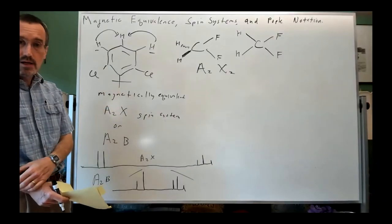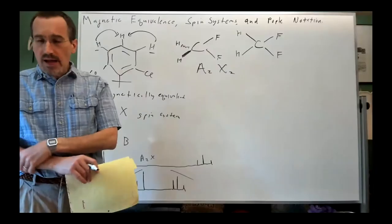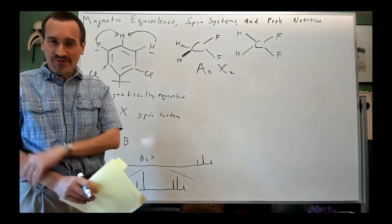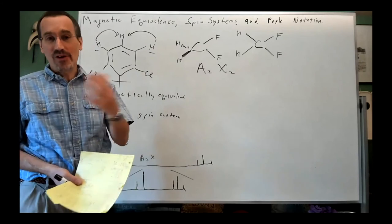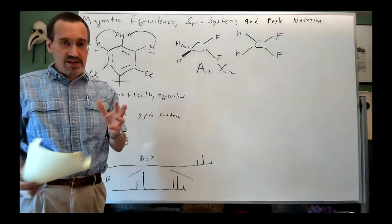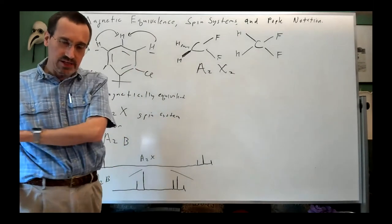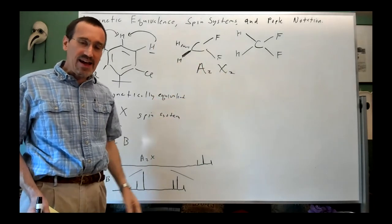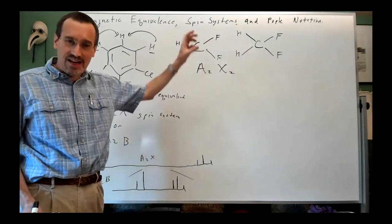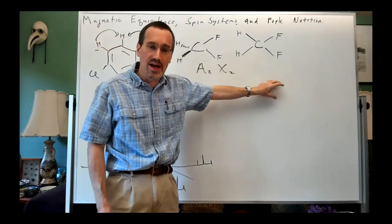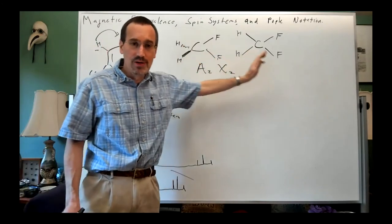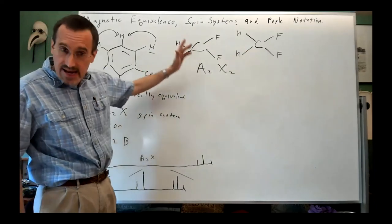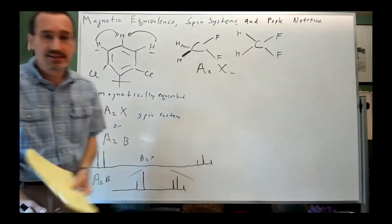Student: Before we move on — in the A₂B notation, that makes sense because when they're close enough to see tenting you use letters close to one another. What's the difference between AM and AX? Why choose one letter over the other? Instructor: You would choose A and X, but if you need a third letter you choose the middle of the alphabet, M. So if I had two things close in chemical shift and another two things close in chemical shift, I might call it ABXY. If I had two things close and one far away, I might call it A₂M₂X, or very often AA'MM'X. Got it — thank you.